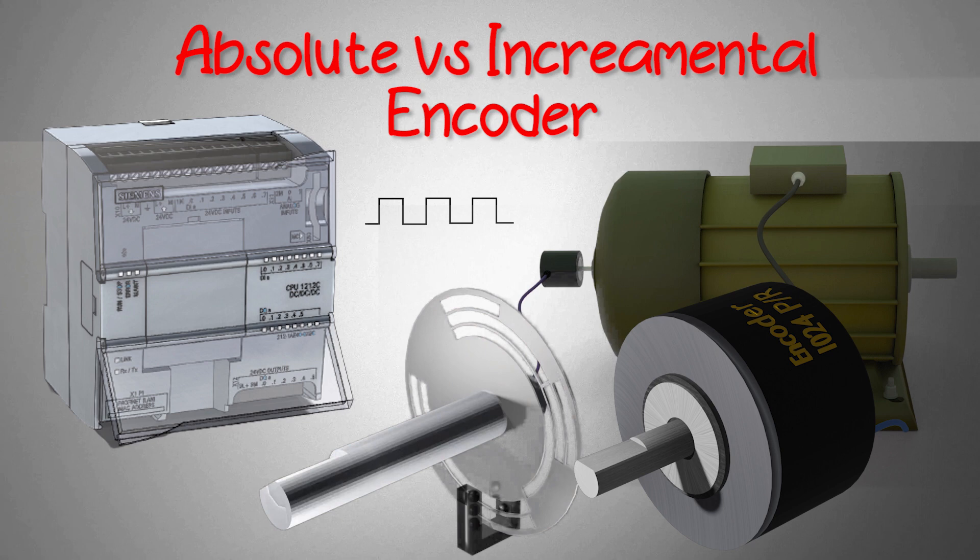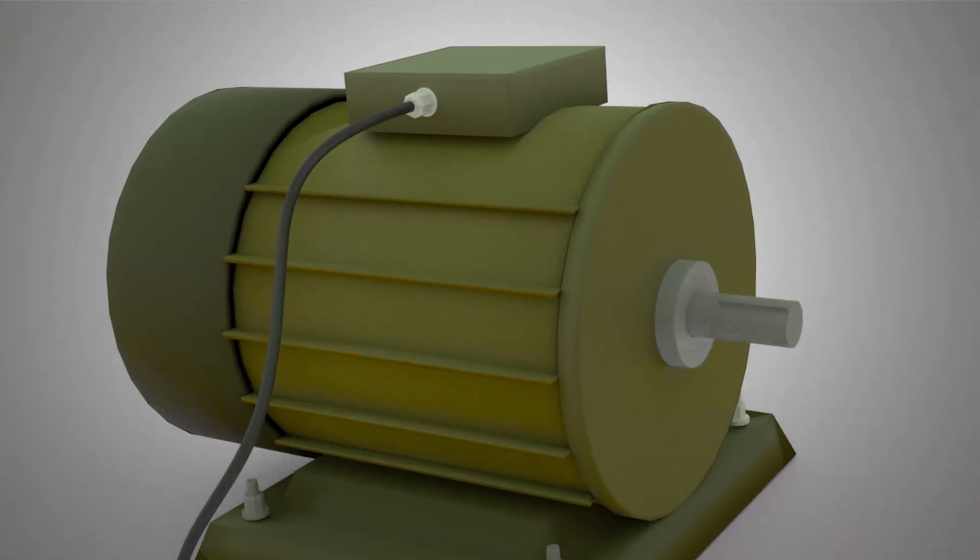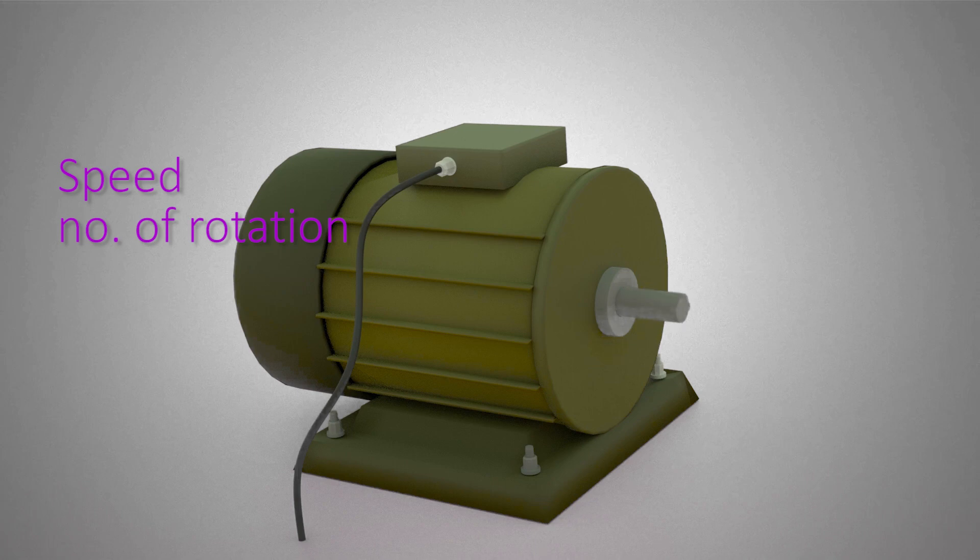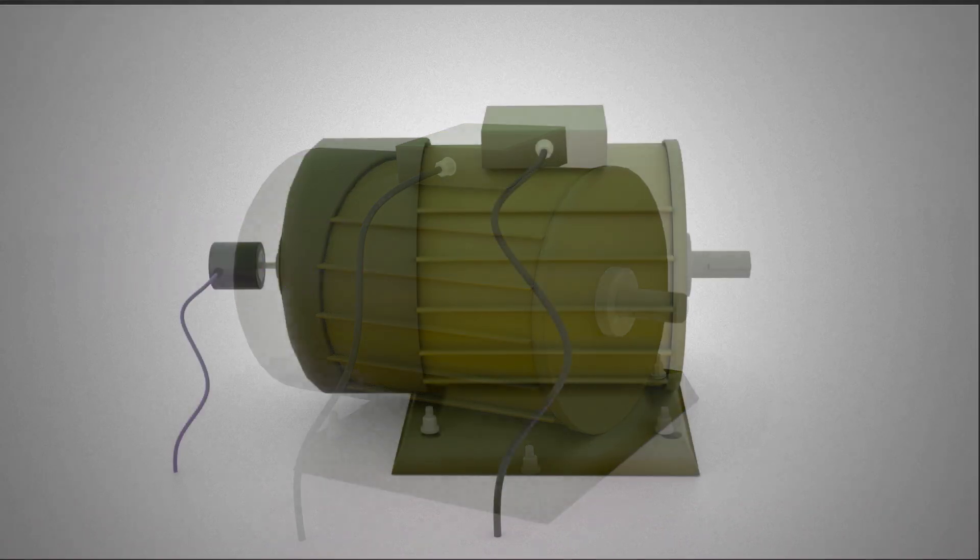Before starting, let's quickly review what an encoder is. Most motors, if we apply power, spin but there is no feedback to let you know what is the speed of the motor, how many times its shaft has been rotated, or what position it ended up in. We can integrate an encoder with the motor to provide that feedback.